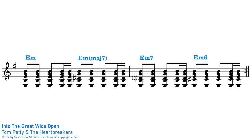"Into the Great Wide Open" by Tom Petty also features a line cliché where the tonic note descends. We start on the tonic chord of E minor and then the root note goes from the top down one semitone to E minor major 7, then down another semitone to D giving us E minor 7, then down to C sharp giving us E minor 6, and then this progression repeats.